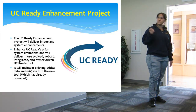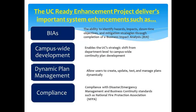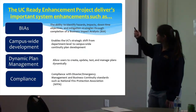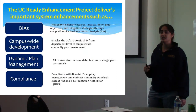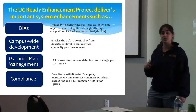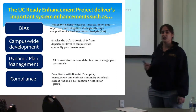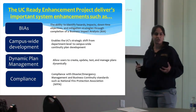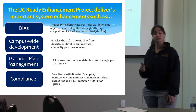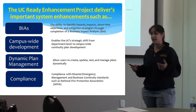Some of the new features include a business impact analysis, campus-wide development, dynamic plan management, and compliance with the National Fire Protection Association. If you don't know what a BIA is, it's basically a report that shows the vulnerabilities on campus and provides mitigation strategies to help reduce some of these impacts.